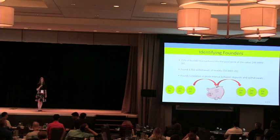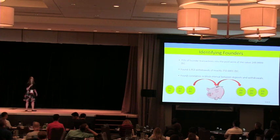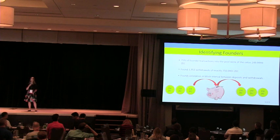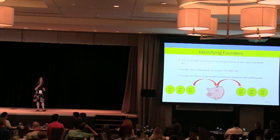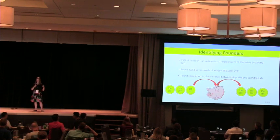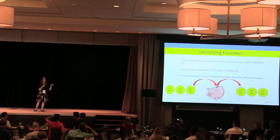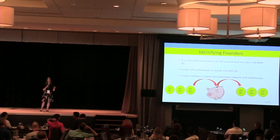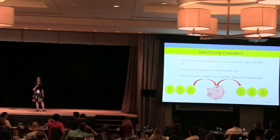For our founders heuristic: we noticed that 75 percent of all founder transactions being put into the pool were of just shy of 250 coins, and we found nearly 2,000 withdrawals of exactly 250.0001 ZEC. We also found that both the 250-coin deposits and withdrawals were occurring at six-block intervals apart, which was an unlikely enough coincidence that we used it to define our founders heuristic.